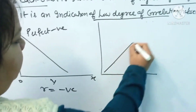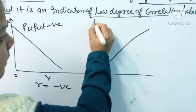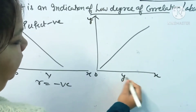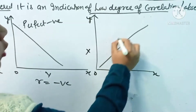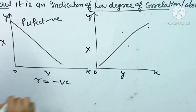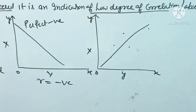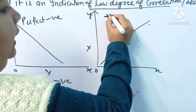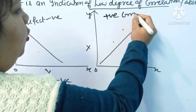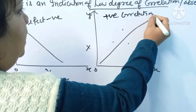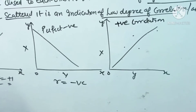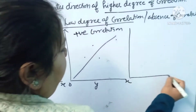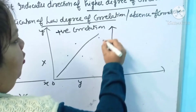If we have a correlation like this — where we plot our points and one or two points fall slightly off the line — then the direction is still positive. It is just positive correlation, not perfect. So this is simply positive correlation.